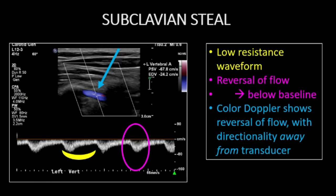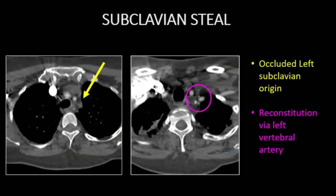In subclavian disease progression, the vertebral artery tracing makes a definitive change to complete flow reversal. The waveform remains low resistance, but the direction of flow is away from the transducer on the color doppler image, reflecting caudally directed flow to supply the subclavian artery distal to stenosis. This spectral doppler displays a low resistance pattern below the baseline. CT angiography confirms the left subclavian artery occlusion at the origin with reconstitution by the left vertebral artery.